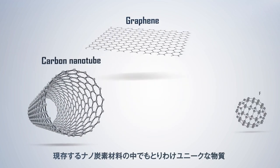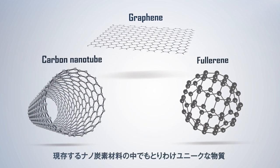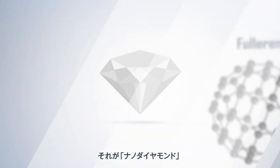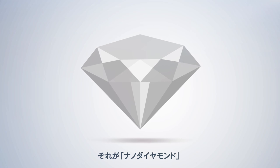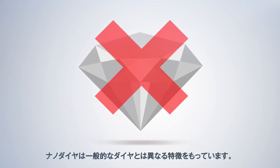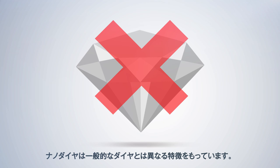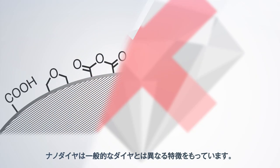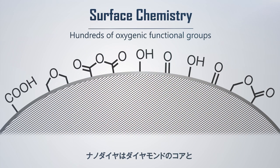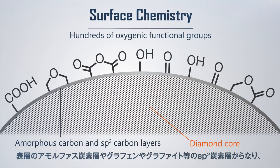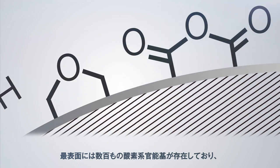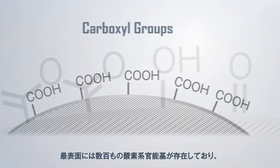There exists an especially unique nanocarbon material called nano-diamond. Nano-diamonds have different characteristics from standard diamonds. A nano-diamond particle consists of a diamond core, amorphous carbon and sp2 carbon layers like graphene and graphite, with hundreds of oxygenic functional groups on the surface.